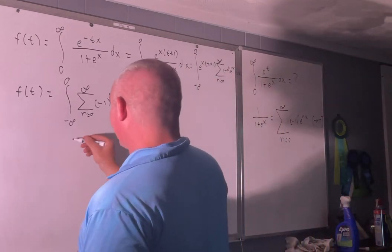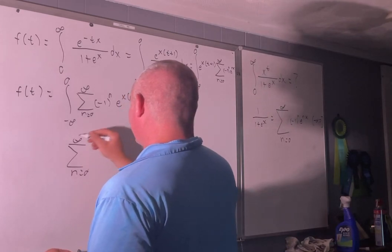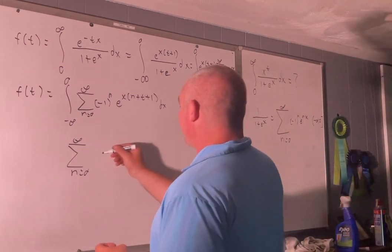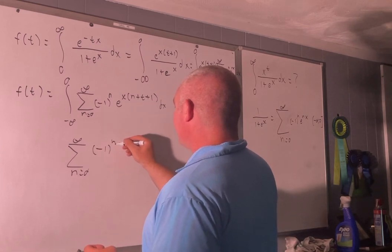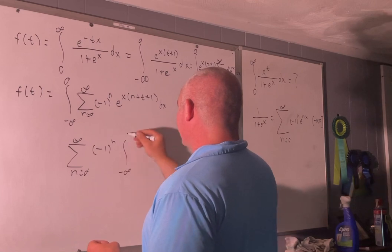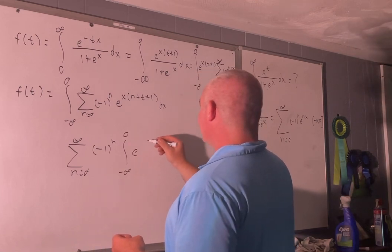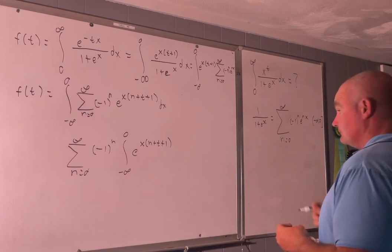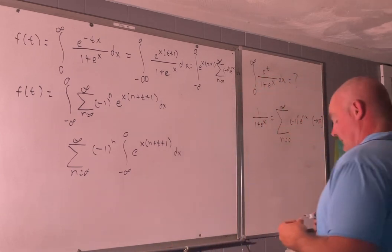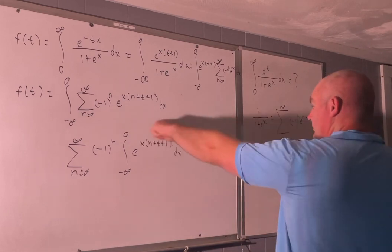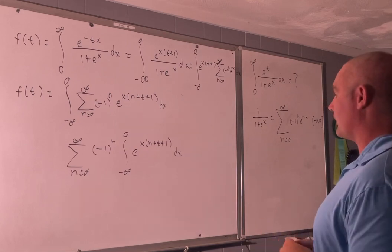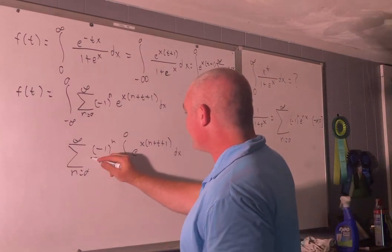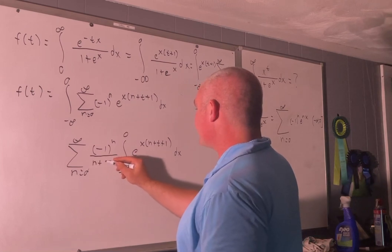Let's rewrite it. That's going to be the sum going from 0 to infinity — and we're going to use Fubini's theorem on this, since there won't be any problems with convergence. We'll have negative 1 to the n times the integral from negative infinity to 0 of e to the x times n plus t plus 1, dx. And this integral evaluates to 1 over n plus t plus 1.